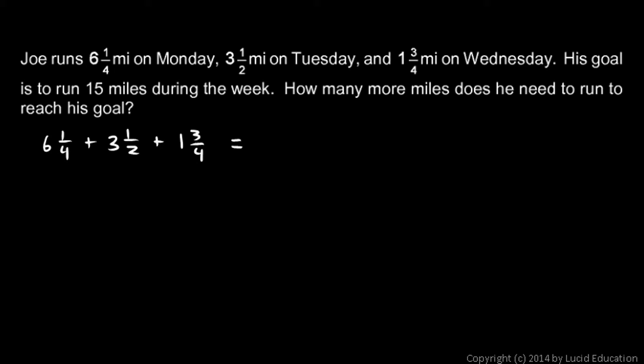Then the three and a half: three times two is six, plus one is seven, so that's the same as seven halves. And I add one and three-quarters: four times one is four, plus three is seven, so that's seven fourths.